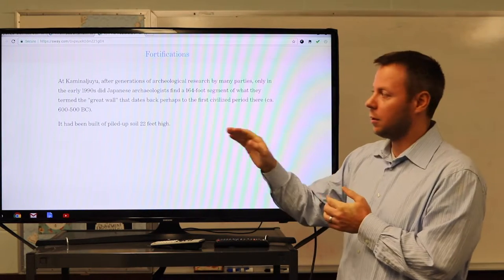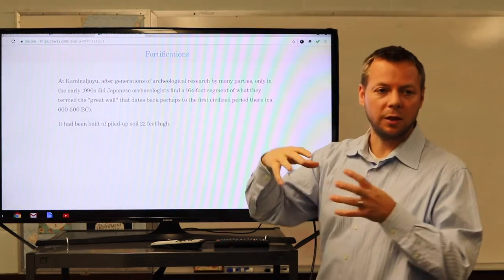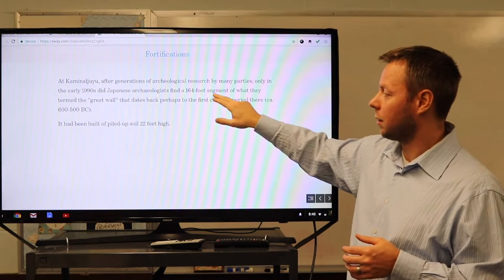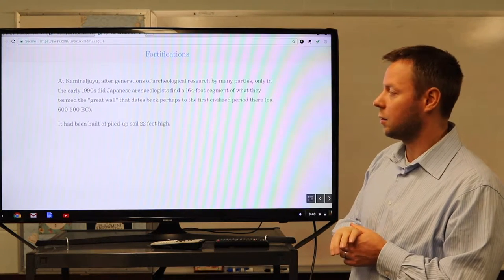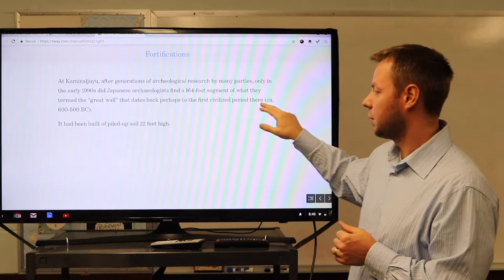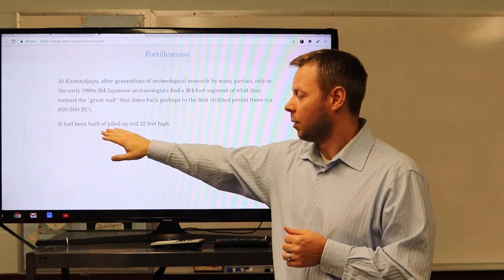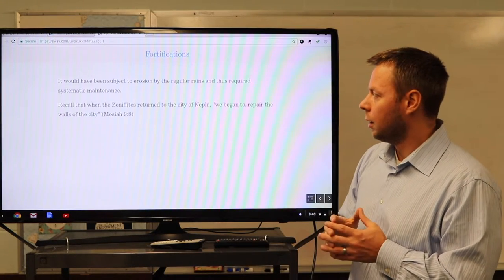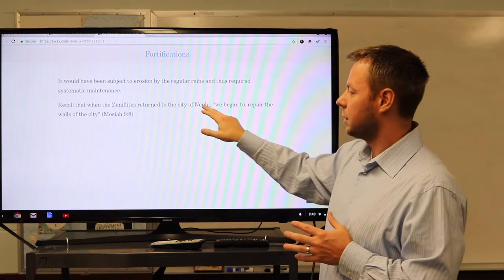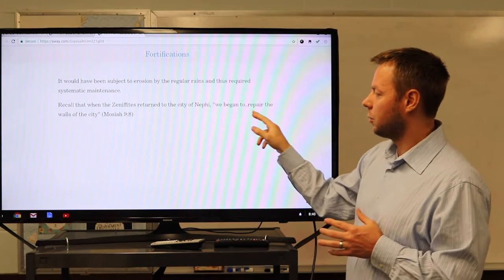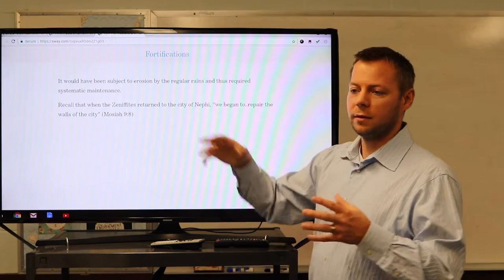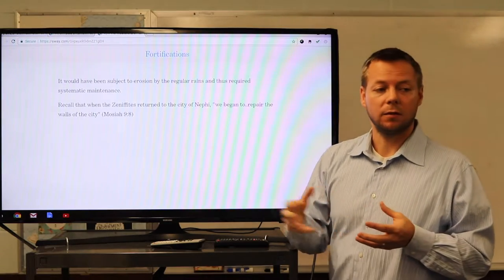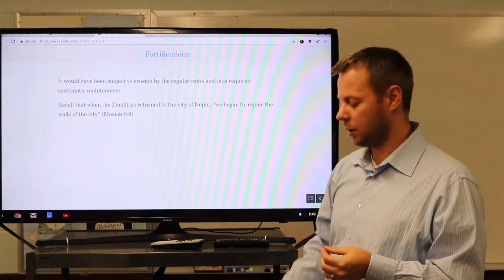The question now is, can we get even more specific? And this is really interesting. So first, at Kaminaljuyu, remember I mentioned this when we were talking about the issues of archaeology and even finding warfare. But it took them until the 1990s before they found the 164-foot segment of what they termed the Great Wall. It dates back to perhaps the first civilized period there, 600-500 BC. It had been built by piled-up soil 22 feet high. So recall when the Zenophites returned to the city of Nephi, they, quote, began to repair the walls of the city, right? That type of wall would have been subject to erosion by regular rains and required systematic maintenance, right? So the textual description of them having to repair the wall makes perfect sense.